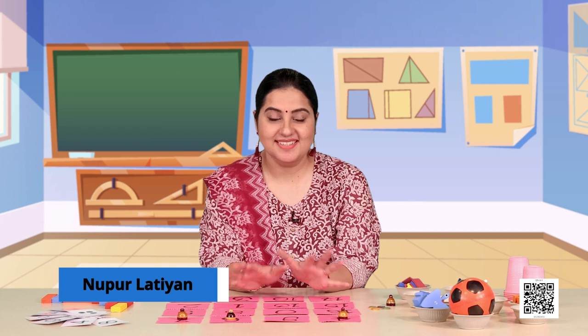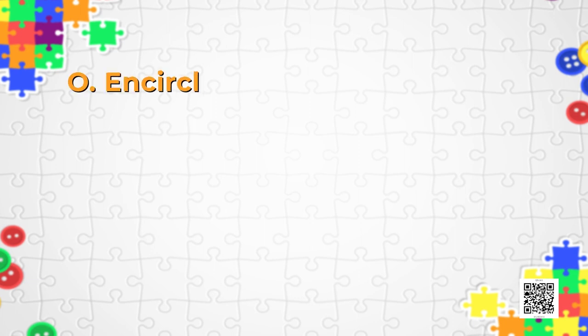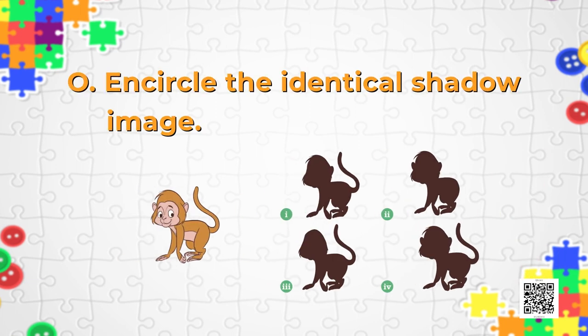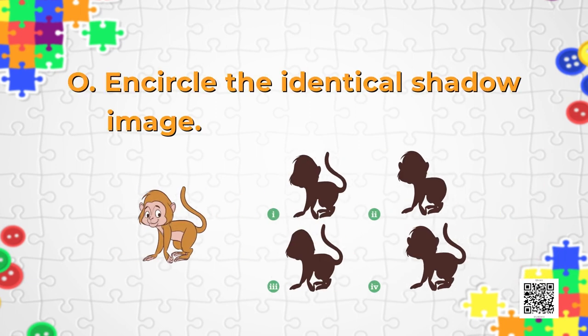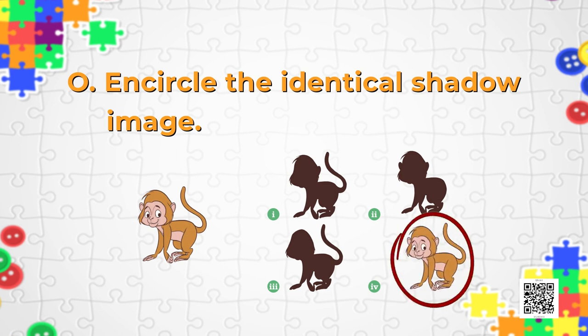Now with this interesting seeds puzzle, it's time to move on to our next puzzle O. Here you have to encircle the identical shadow image. You can see the image of the monkey — you just have to encircle the shadow image of that monkey, but it should be identical. Try it!